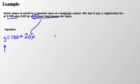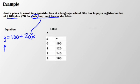Now, I can also represent this as a table. Where at zero hours, it doesn't really make sense. I don't know why you would pay the registration fee but never take classes. Anyway, at zero hours, my total cost is $100. At one hour, my total cost is $120. Two is $140. Three is $160.